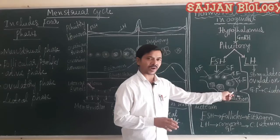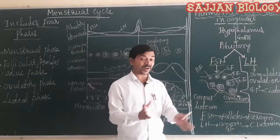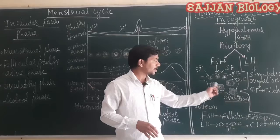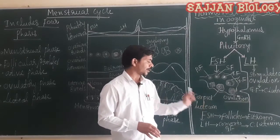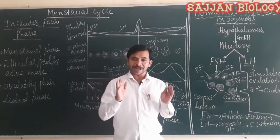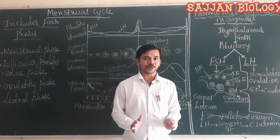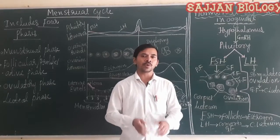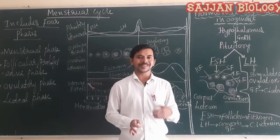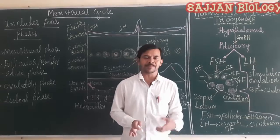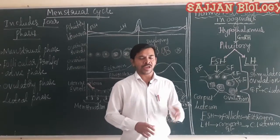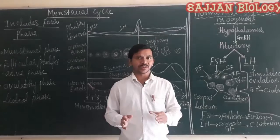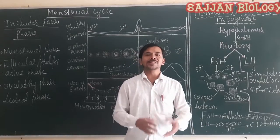Once after ovulation, the empty Graafian follicle later converts into what is called the corpus luteum. The basic function of this corpus luteum is the secretion of progesterone hormone. Progesterone hormone is called the pregnancy hormone. This is what hormonal regulation in oogenesis covers.